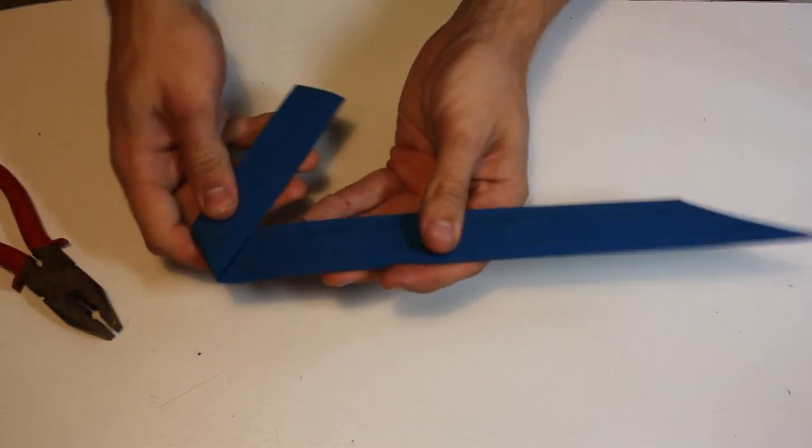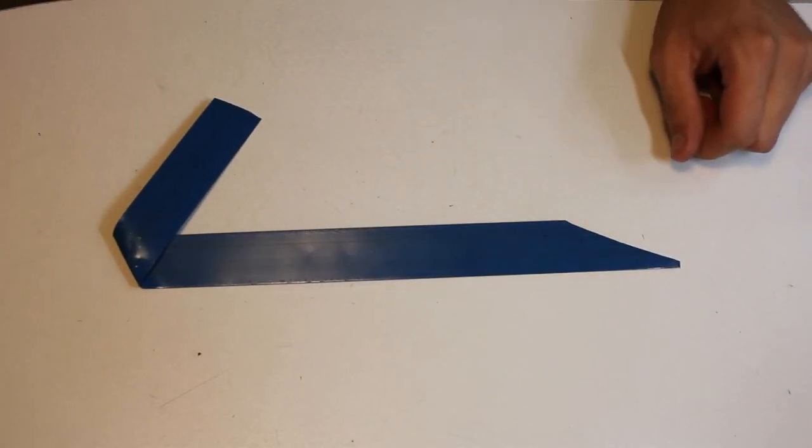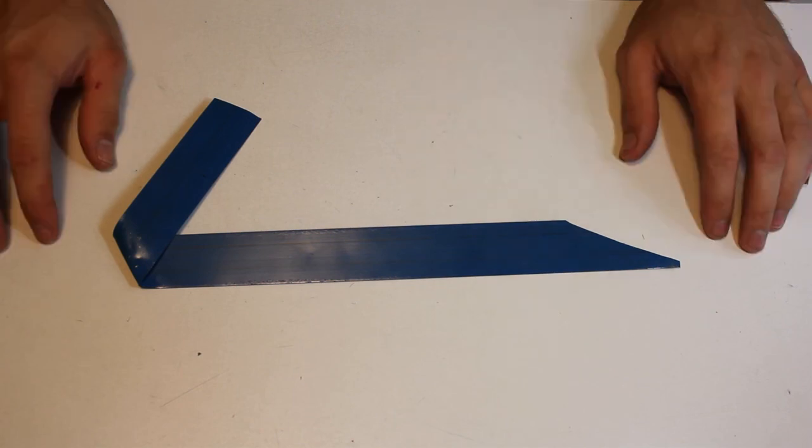And now is when we need those pliers because this is a fairly strong material. So, the pliers are just going to let us take this and squish it down so that it's thin enough to actually go in there. And the hammer also would help out with this if you do have that, but we can get it done with the pliers. And so, that's how we make the latch knife.